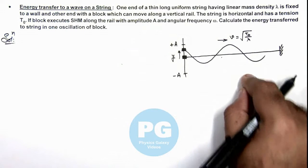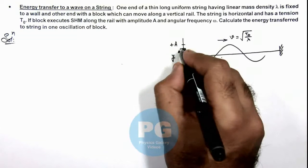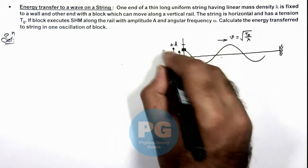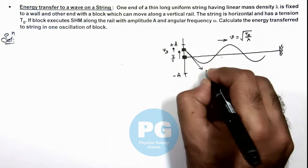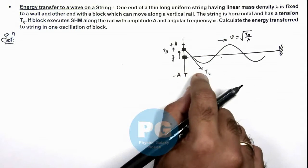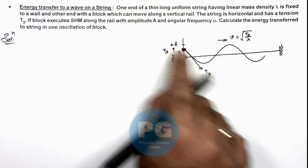Now in this situation, the block is going up with a velocity v_y. If we consider the string is having a tangential tension T₀, this tension will be extracting energy from the block.